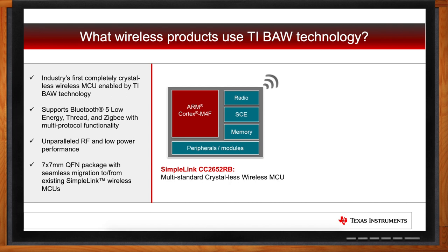This 7x7 package allows you to be pin-to-pin compatible with other offerings from the TI connectivity portfolio. If you're currently using a TI connectivity device in that 7x7 package without BAW technology, you can upgrade with the same hardware design — minus the crystals — to the BAW device. We've seen users doing this to simplify their circuit and source fewer devices.